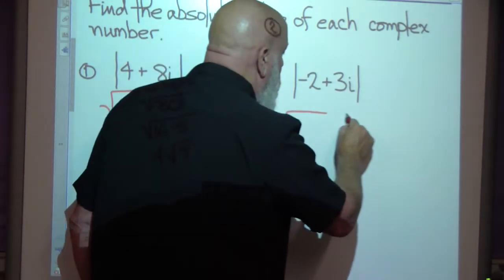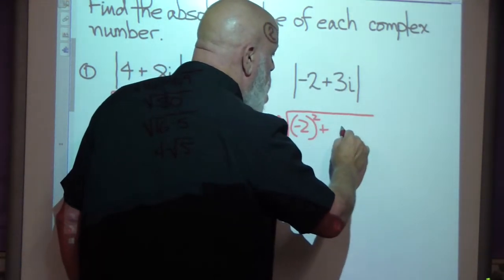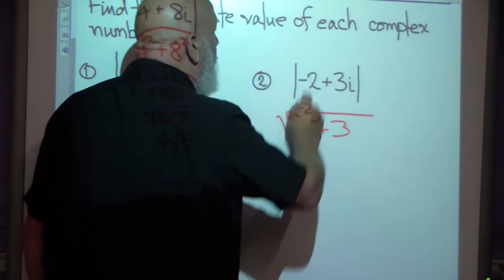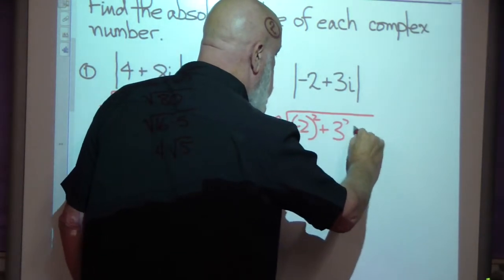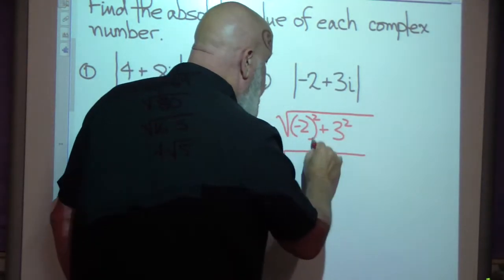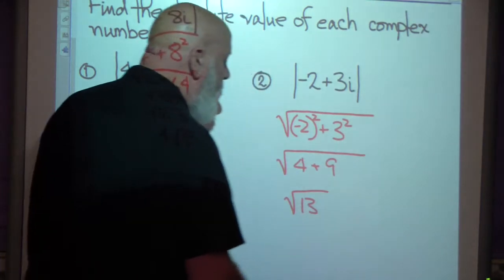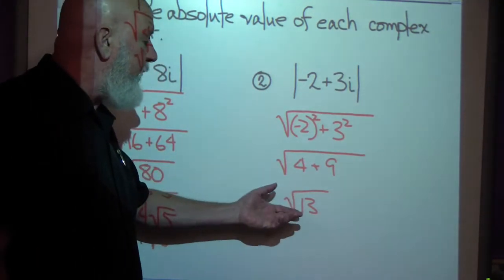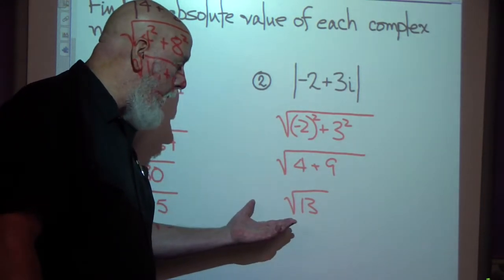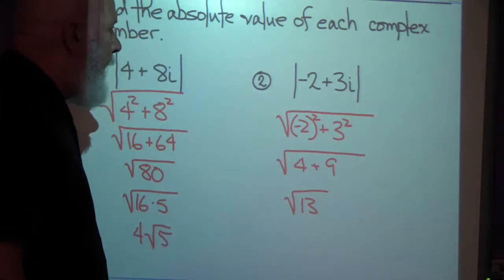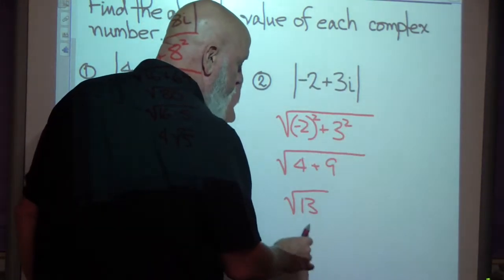Square root of a squared: negative 2 squared is positive 4, plus b squared, 3 squared is 9. So this gives me the square root of 4 plus 9, which is the square root of 13. In this case there are no perfect squares in there — 13 is prime. So I would just leave it like that. The absolute value of negative 2 plus 3i is radical 13.